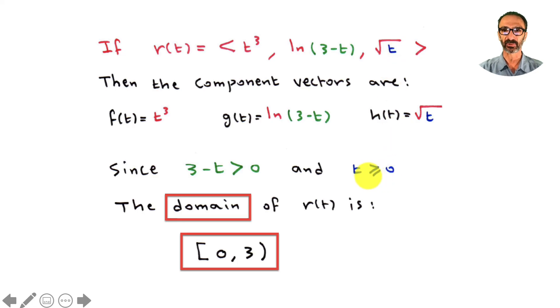Looking at the square root, t is in blue and t has to be greater than or equal to zero. Combining these two together tells me that the domain of the space curve has to be greater than or equal to zero and less than three, because if you subtract three and divide by negative one, you end up with t less than positive three.